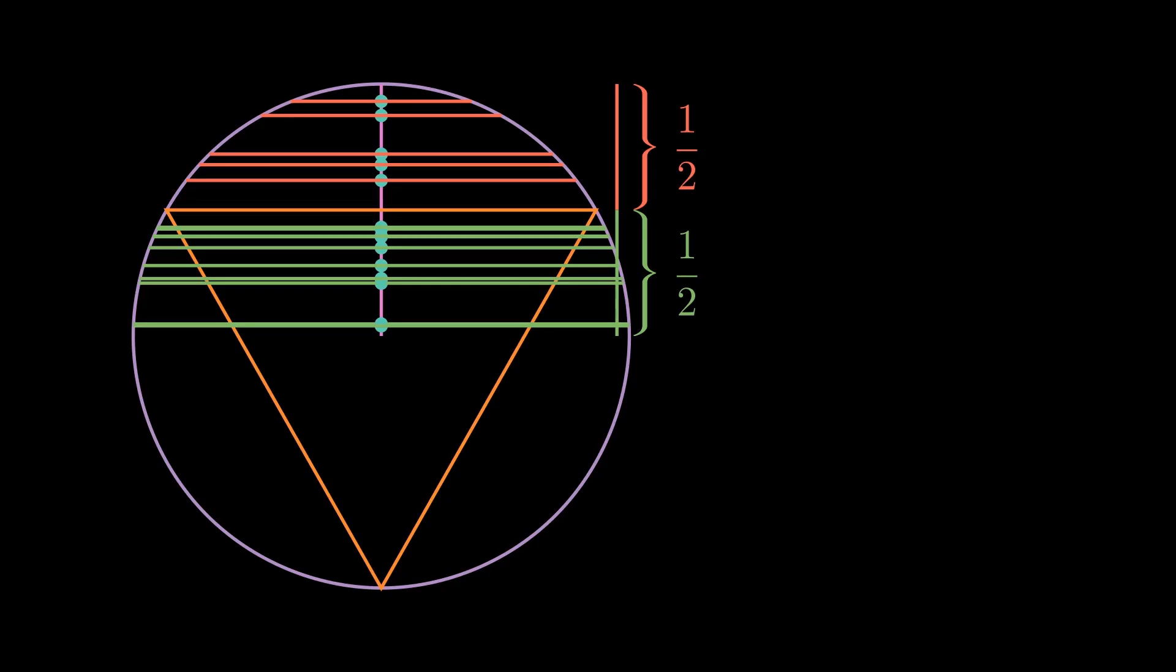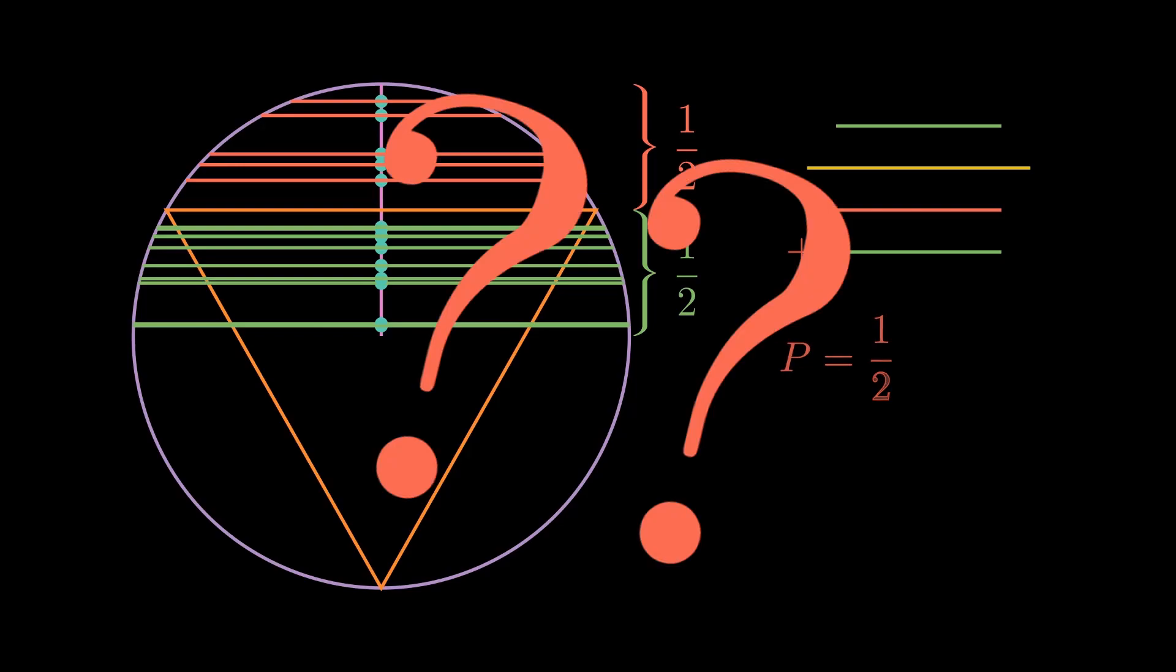But wait, what? Our reasoning here suggests that since half of the random distribution of midpoints gives chords longer than our side length, and the other half gives chords shorter, then the actual probability of a randomly chosen chord being longer than the side length of an inscribed triangle is one half.